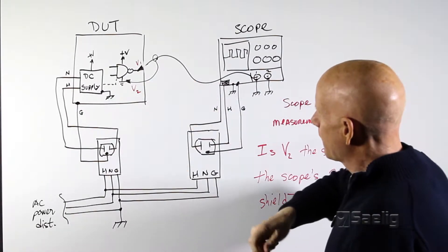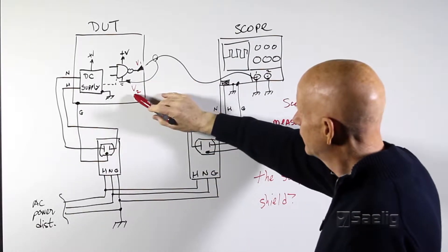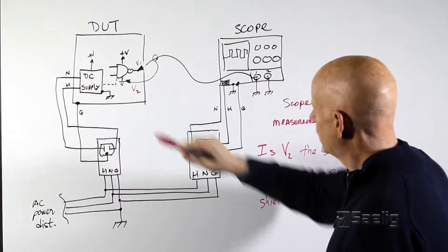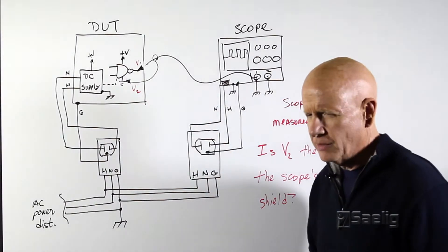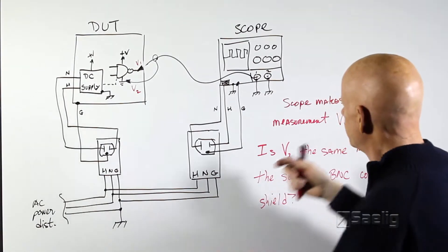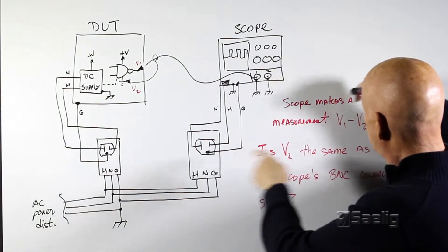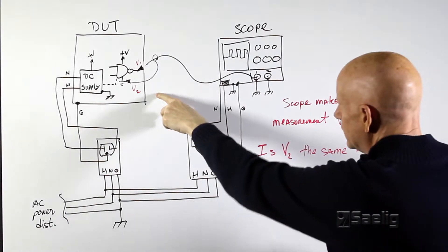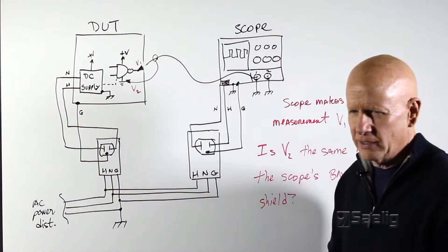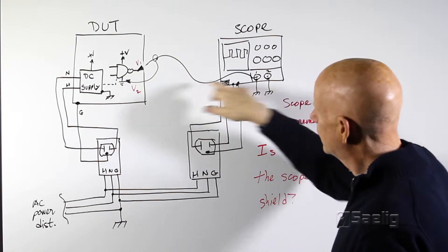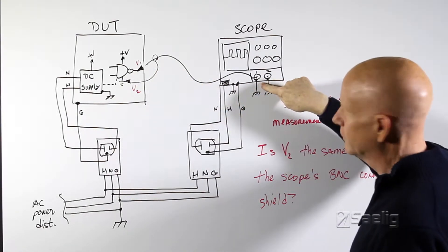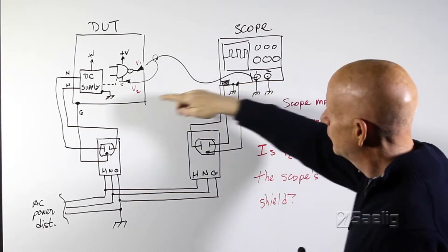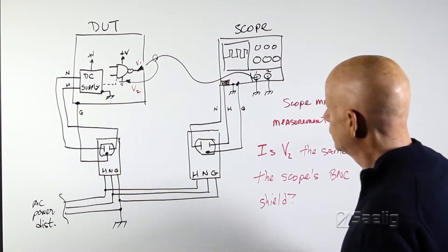So the question is, is V2 really ground? That's what you have to make sure of in some cases. Because the scope makes a measurement V1 minus V2, V2 being ground or it may not actually be ground. And if it isn't, then that's going to cause a problem because this point here is going to try to either pull that up or down to the same potential.